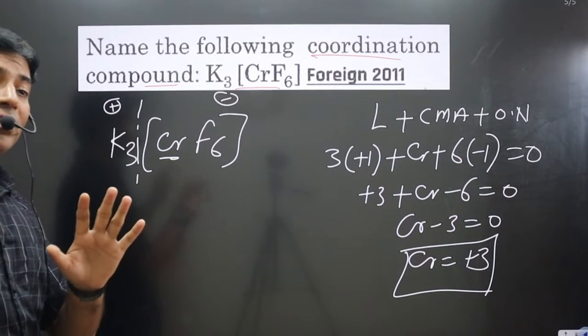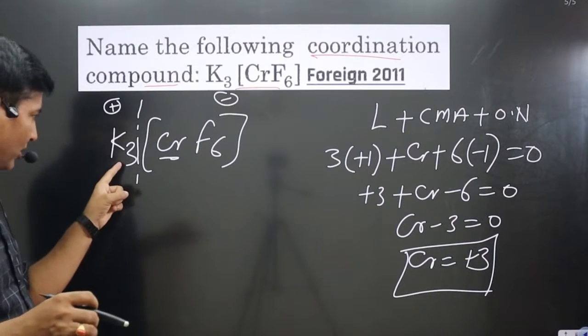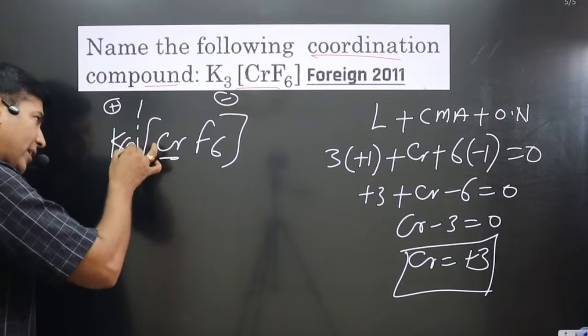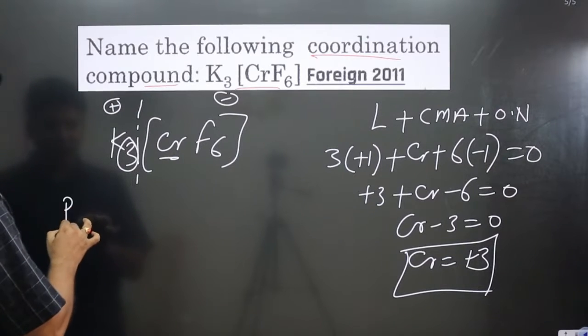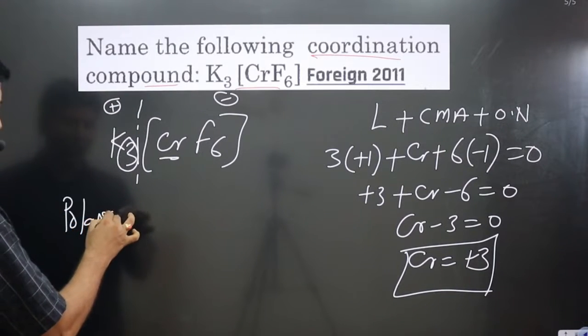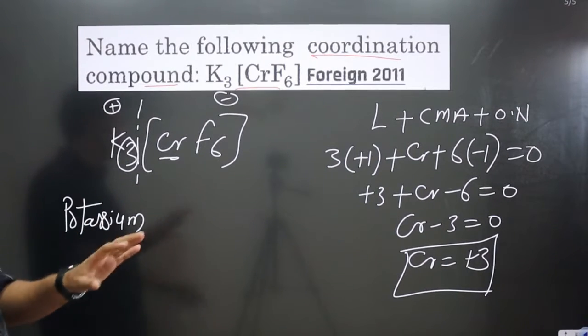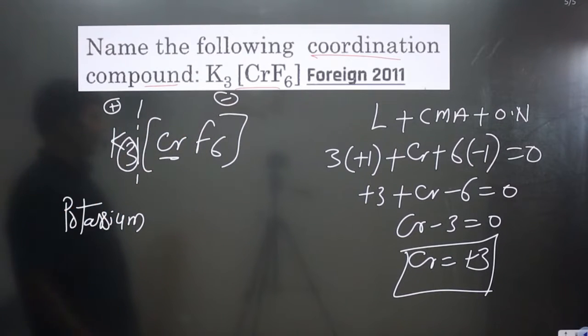For the counter ion, you should not focus on the numbers or how many counter ions are given. We have three potassium, but we cannot say tripotassium. We ignore the numbers and just write the name: potassium. We should not write dipotassium or pentapotassium; these numbers do not matter at all.